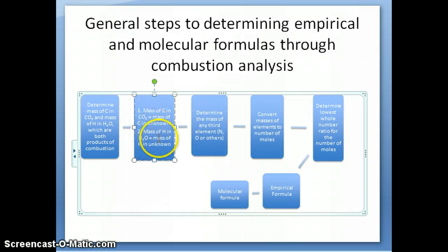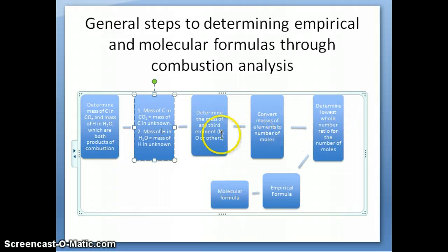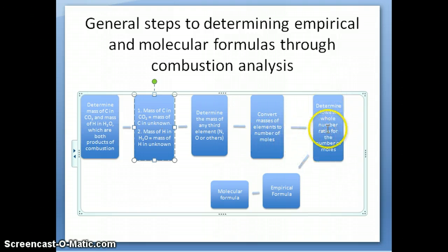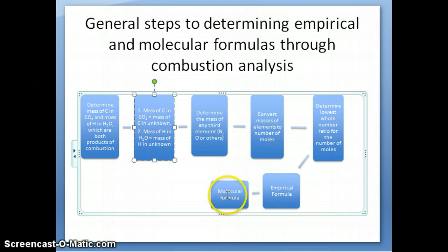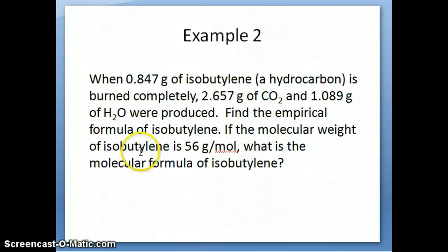Once you have the masses of the elements in the compound, you repeat the steps from decomposition analysis: convert the masses to number of moles for each element, then get the lowest whole number ratio of moles. After that, it's just a matter of writing the empirical formula, and if you have the molar mass, you can use it to figure out the molecular formula.